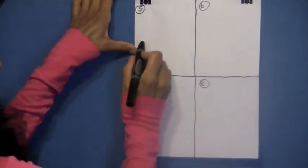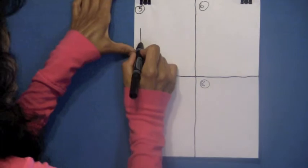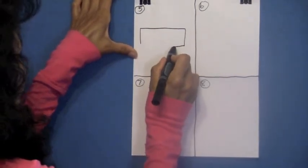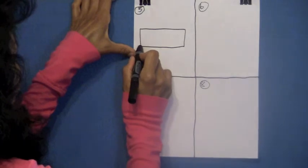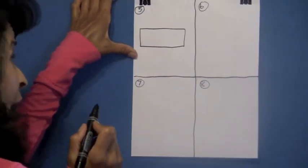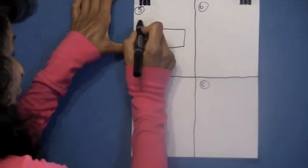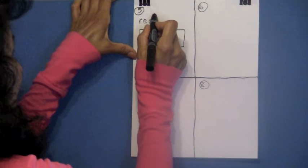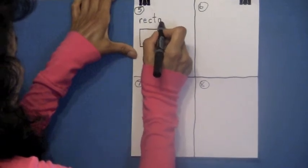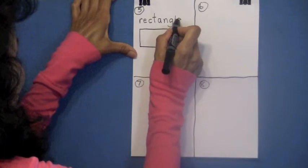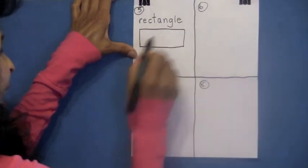In box five, I want you to draw a rectangle. A rectangle has two equal sides. Boys and girls, help me spell rectangle. I want to hear you. R-E-C-T-A-N-G-L-E. Rectangle.